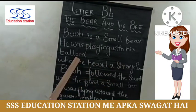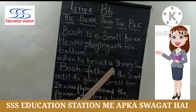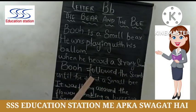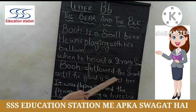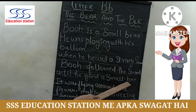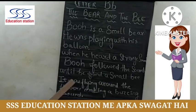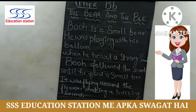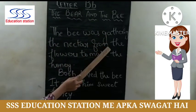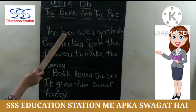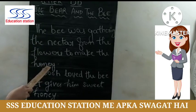When he heard a strong sound, Boo followed the sound. तो Boo bear जो है वो उस आवाज को follow करने लगा. Until he found a small bee — जब वो आवाज को follow करके गया तो उसने एक small bee को देखा. It was flying around the flowers making a buzzing sound. The bee was gathering the nectar from the flowers to make the honey — जो मधु मक्खी है वो फूलों पे बैठ के रस इकट्ठा कर रही थी ताकि वो honey बना सके.